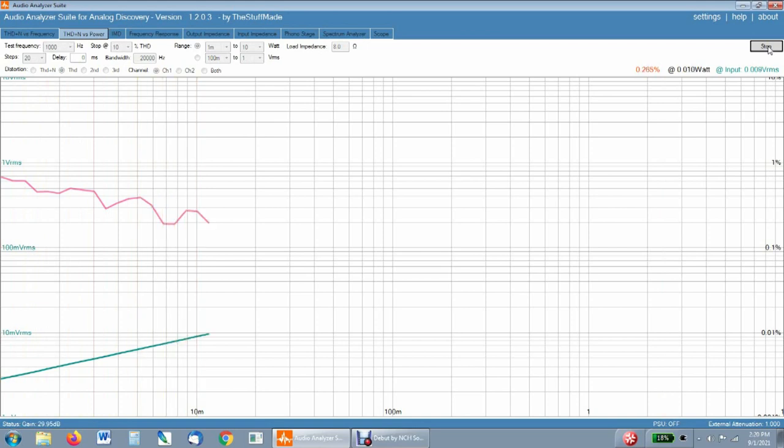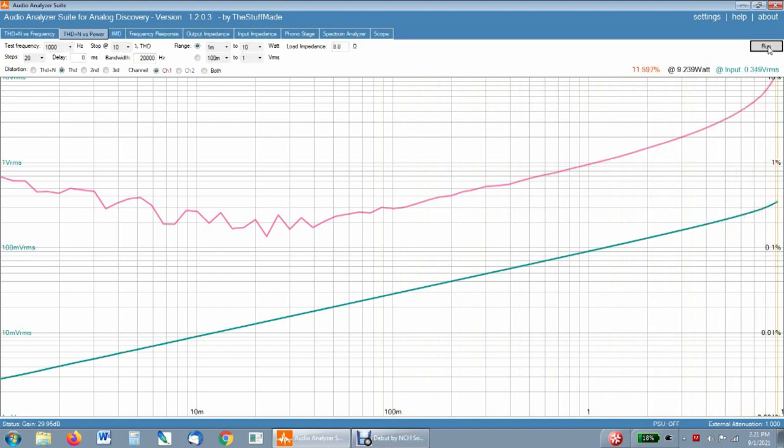Here comes this pull. It's starting out over half a percent distortion, even at very low volume levels. We just went past one percent, and there's where it starts climbing out of the roof. At 10 percent distortion, it's putting out eight and a half watts, but nobody's going to listen to it at 10 percent distortion.